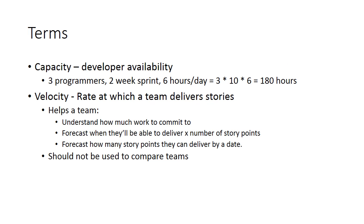Capacity relates to how much time developers have available to do work. If three programmers will have ten workdays in a two-week sprint, and we assume that each works six hours per day, then we have a total of 180 hours of capacity for this sprint.